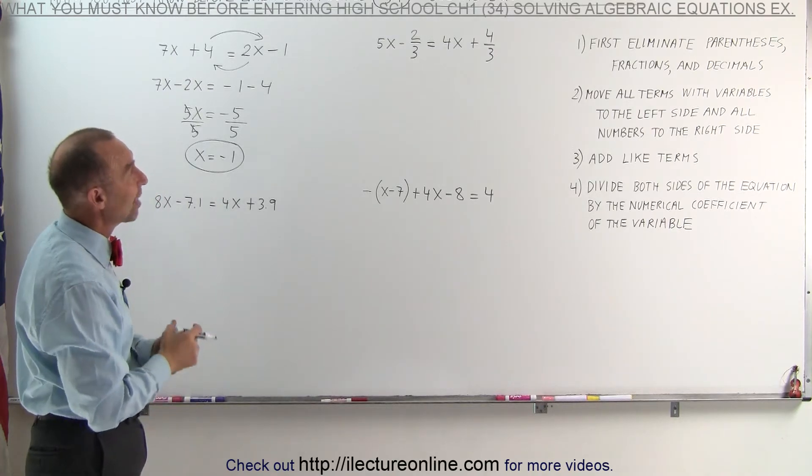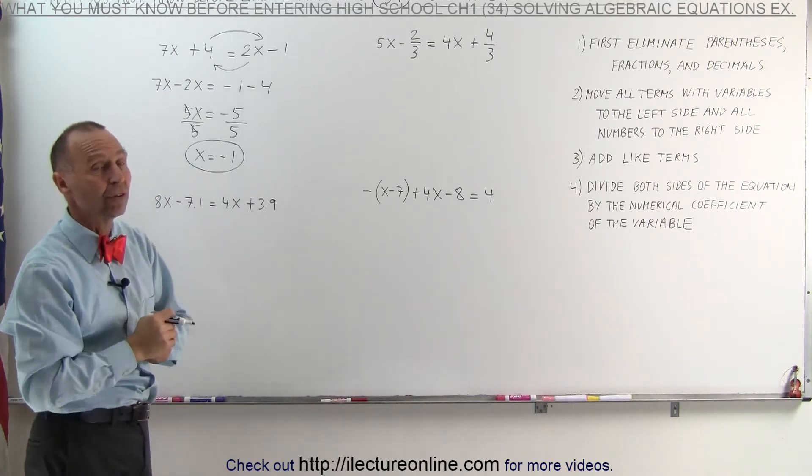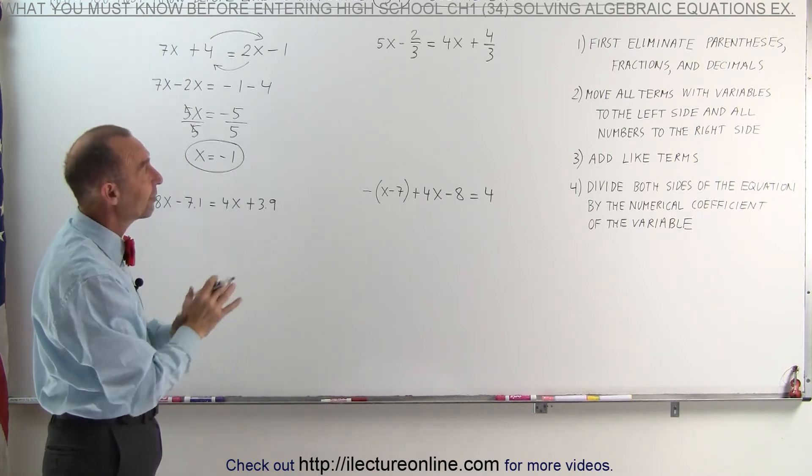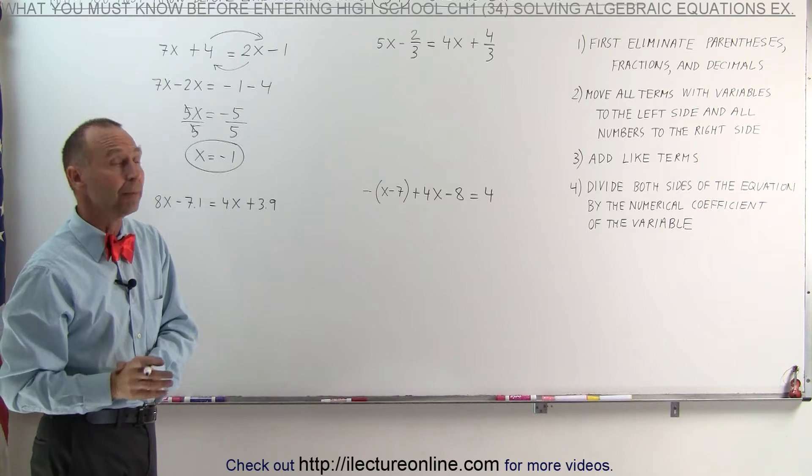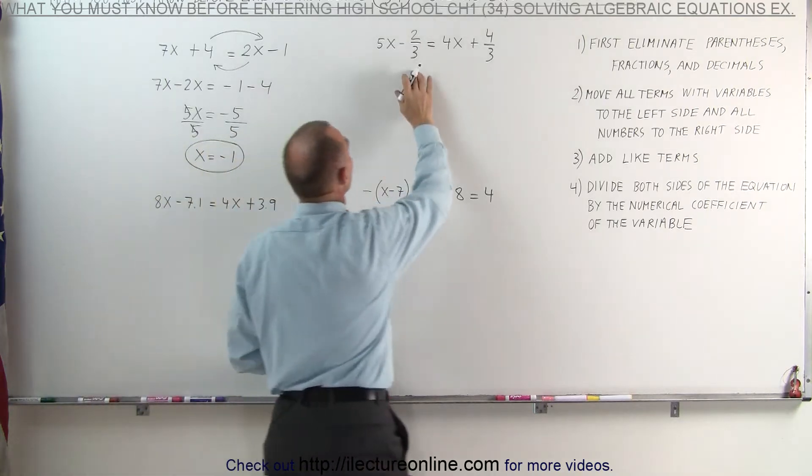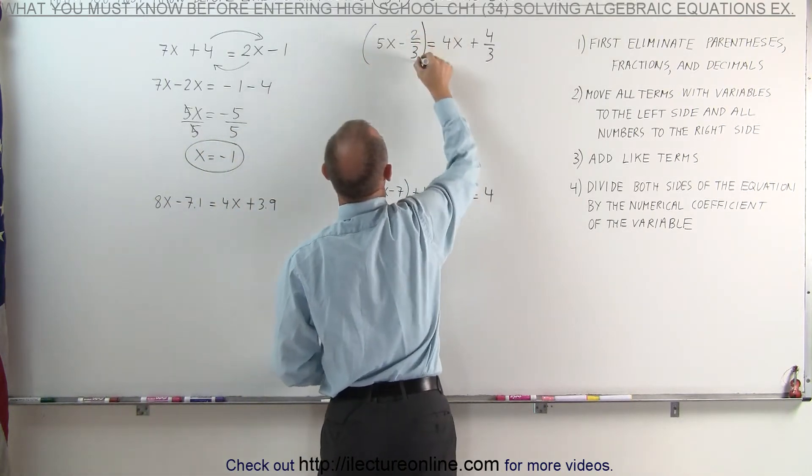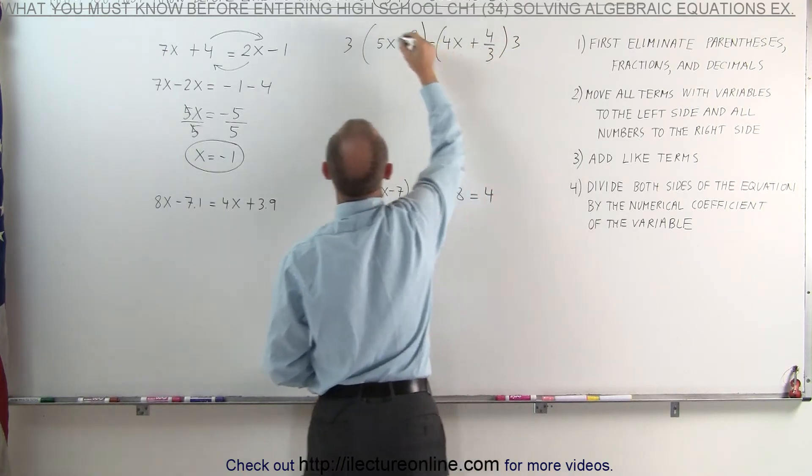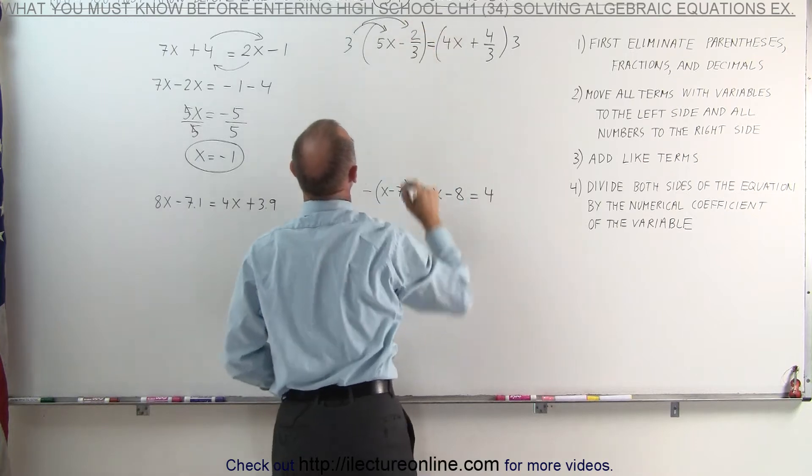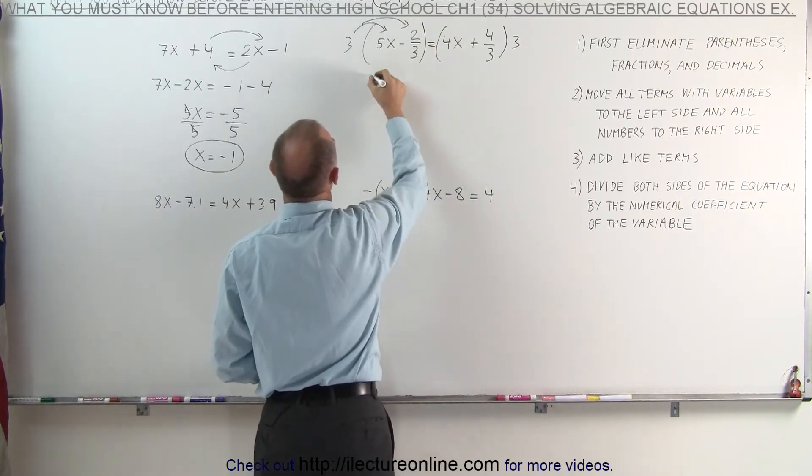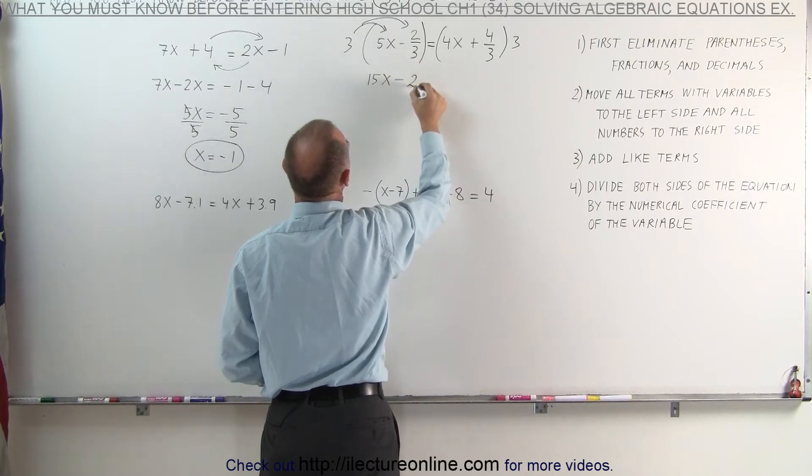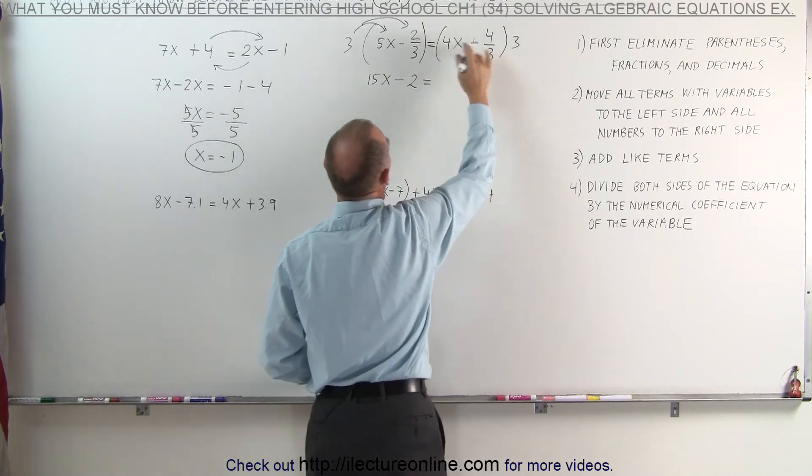On the second example, we have fractions. The first thing we want to do is get rid of the fractions. Notice we can do that by multiplying both sides of the equation by the lowest common denominator, which in this case is the number 3. Multiply the left side by 3 and multiply the right side by 3.